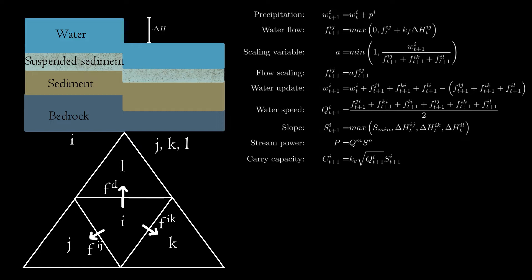At this stage, we calculate a water speed Q, defined as the average between incoming and outgoing water. We also need a slope S, calculated using the maximum of the height differences. With water speed and slope, we can define a carry capacity — the amount of sediment which can be suspended in water. Typically, the stream power equation is used for this purpose. The stream power P is a function of water flow Q and slope S, where M and N are numerical parameters. I've chosen M to be 0.5 and N to be 1. With an additional scale parameter Kc, the carry capacity equation is defined accordingly. The larger the Kc parameter, the more sediment can be carried by water, which in a sense increases erosion.